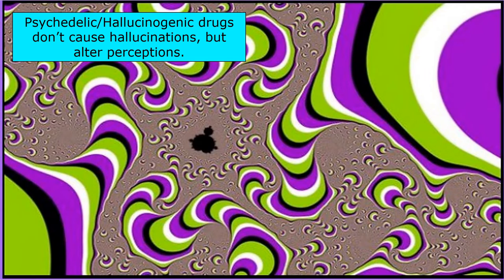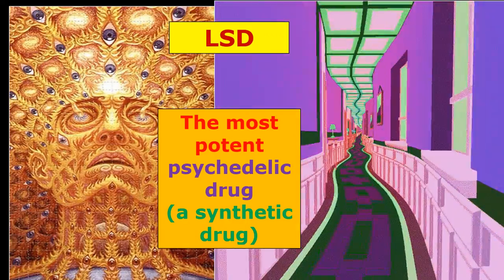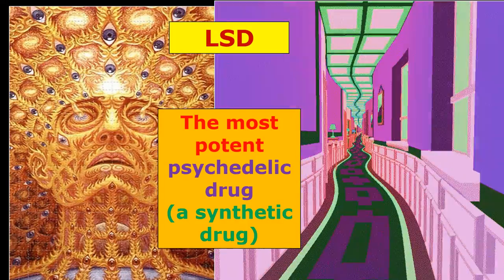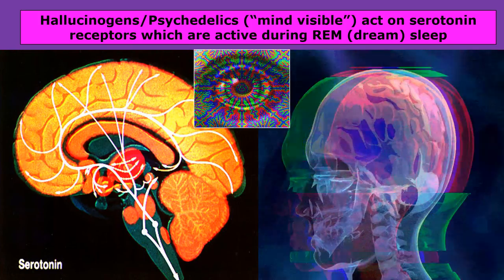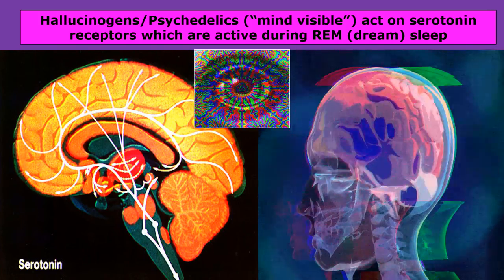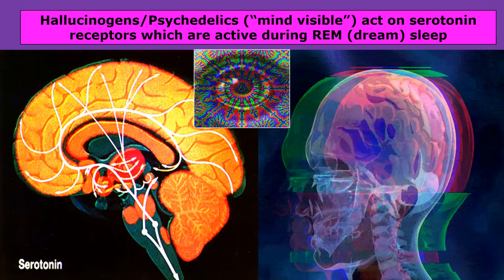Another category is psychedelic drugs, sometimes called hallucinogens. Even though they don't really cause hallucinations, these drugs alter your perceptions so the world looks a little bit weird. The most potent and perhaps most common psychedelic drug is LSD, sometimes called acid — a synthetic drug created in a laboratory. Hallucinogens or psychedelics act on serotonin receptors in the brain. Serotonin pathways spread throughout the brain and these receptors are active during REM sleep when we are dreaming. In fact, LSD has a chemical structure very similar to serotonin.